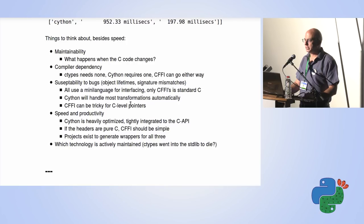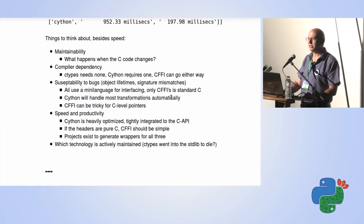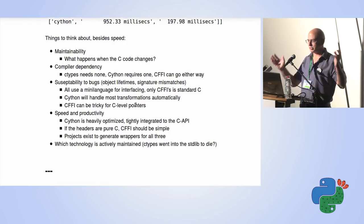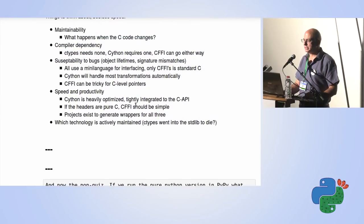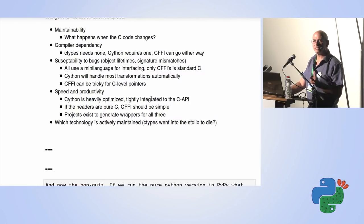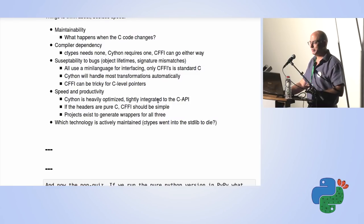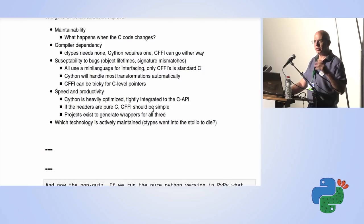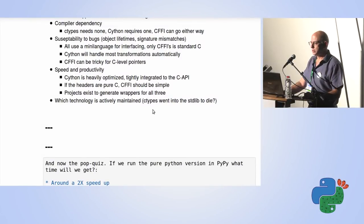There's always a trade-off between speed and productivity. Cython is heavily optimized, tightly integrates the C API, and gives you fast, clean Python code — though if you look under the shell it's really messy. If headers are clean, CFFI should be very simple. Projects exist to wrap all three to create wrapper functions. C-types is not really maintained — it's got bugs listed for about six or seven years. CFFI and Cython are pretty good on that front.